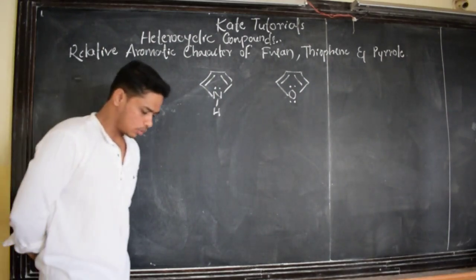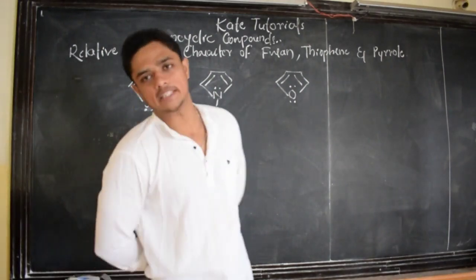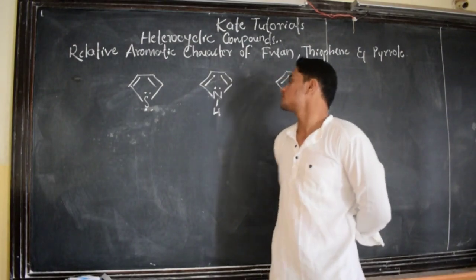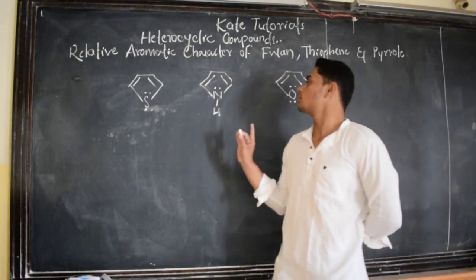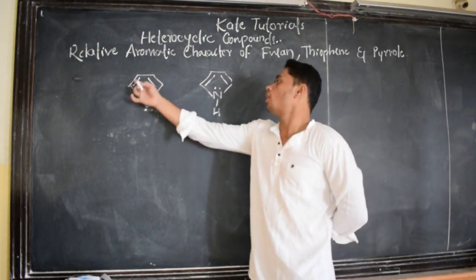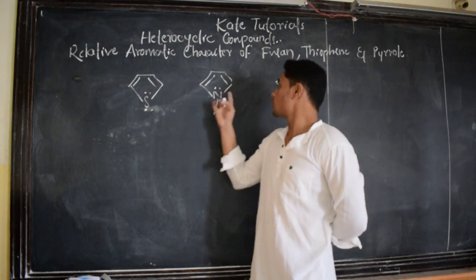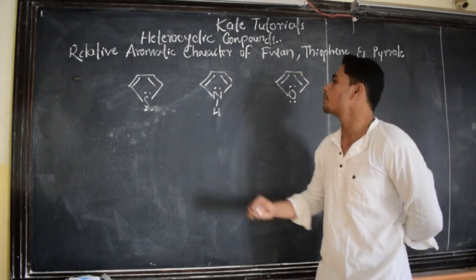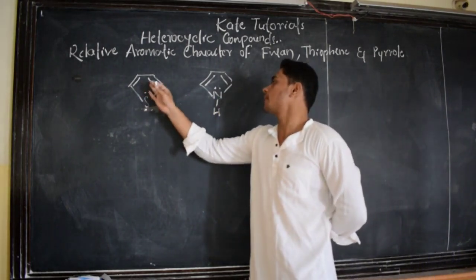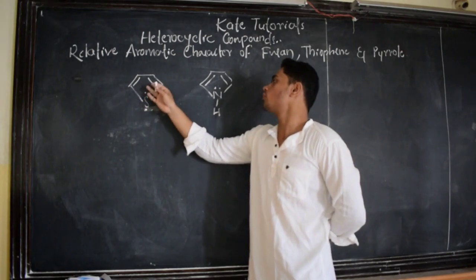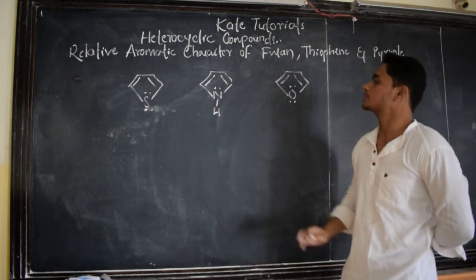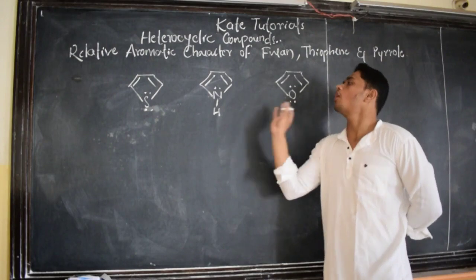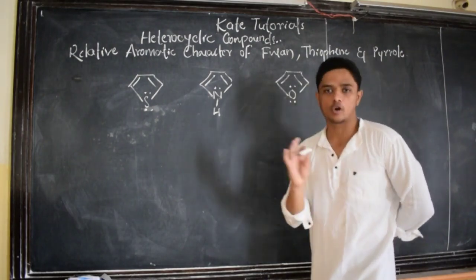Now we need to discuss their aromaticity. As I have discussed in previous classes, all carbon, sulfur, and other atoms here are sp2-hybridized. All are in a single plane. And all have 6 pi electrons — 2, 4, 6 — so all are satisfying Hückel's rule. So all are aromatic, no doubt.